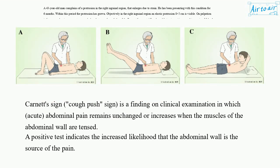Carnot's sign — cough push sign — is a finding on clinical examination in which acute abdominal pain remains unchanged or increases when the muscles of the abdominal wall are tensed. A positive test indicates the increased likelihood that the abdominal wall is the source of the pain.